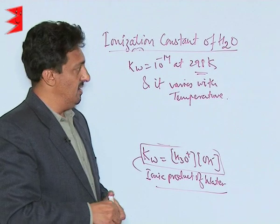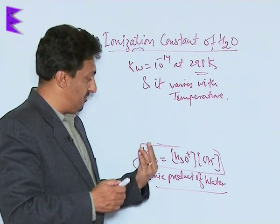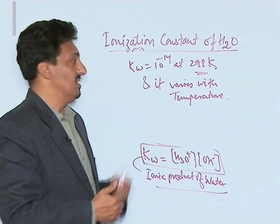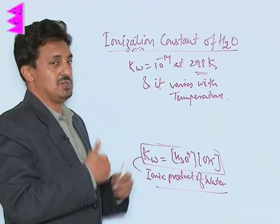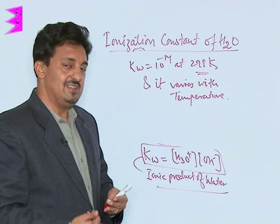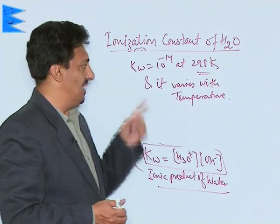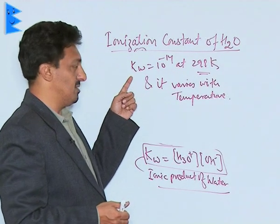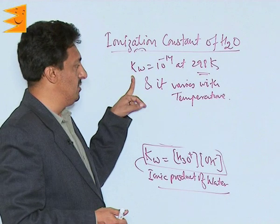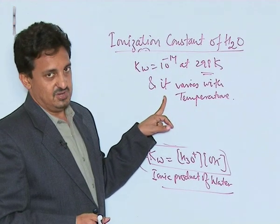Since the dissociation of water increases with temperature, the value of Kw also increases. With a decrease in temperature, the dissociation of water decreases, so the value of the ionic product of water also decreases. So Kw is a value that varies only with temperature.